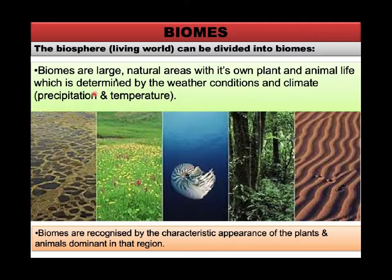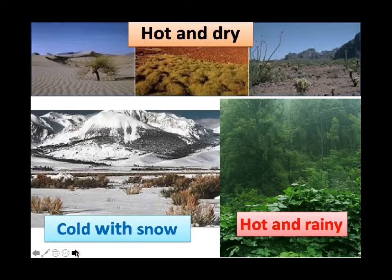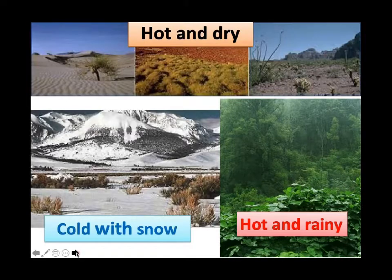They are large natural areas. Each of these areas has their own type of plants growing there, their own animals living there. And this is also determined by the type of weather and the type of climate in that area. We have discovered that different parts of the earth have different climates.